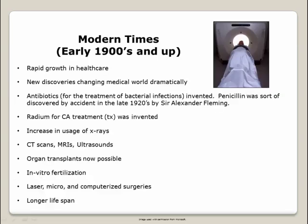Modern times, from the early 1900s to today. A rapid growth in health care began in the early 1900s, with new discoveries dramatically changing the medical world. Antibiotics were invented to treat bacterial infections, and penicillin was discovered much by accident in the late 1920s by Sir Alexander Fleming. Radium for cancer treatment was invented, and there has been increased usage of x-rays. Technology has led to widespread usage of non-invasive diagnostic tools such as CT scans, MRIs, and ultrasounds. Today, different types of organs are being successfully transplanted, in vitro fertilization is available, and surgeons are able to use laser, micro, and computerized surgeries. There is a much longer lifespan today compared to the other time periods discussed.